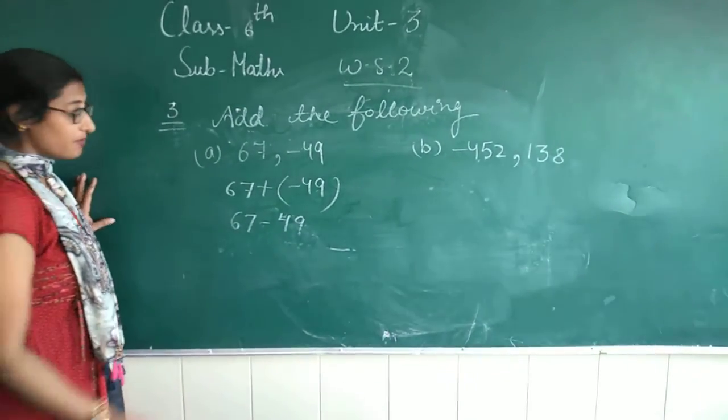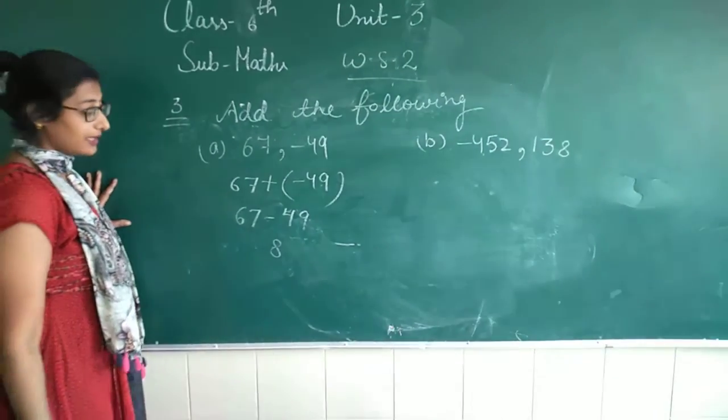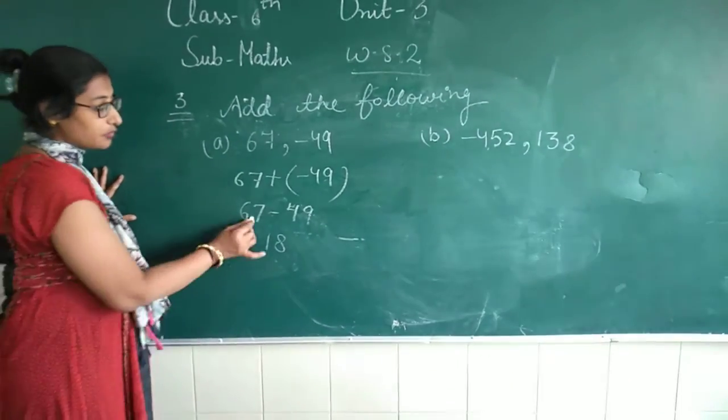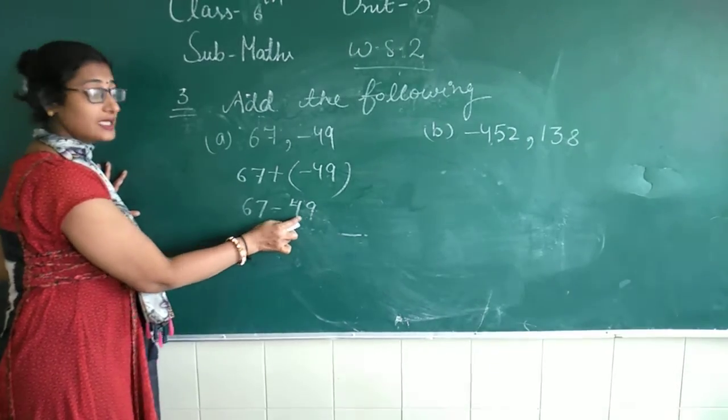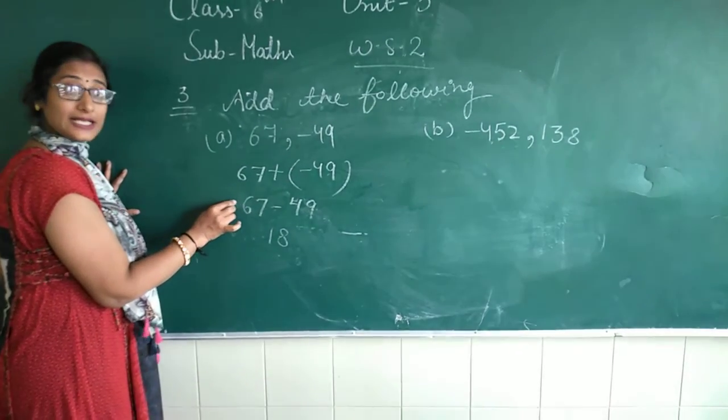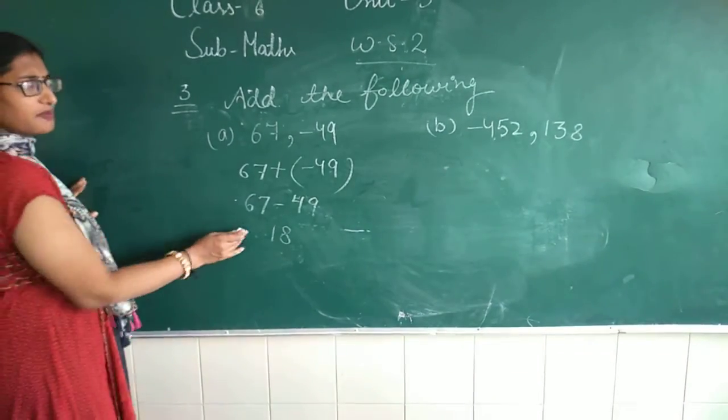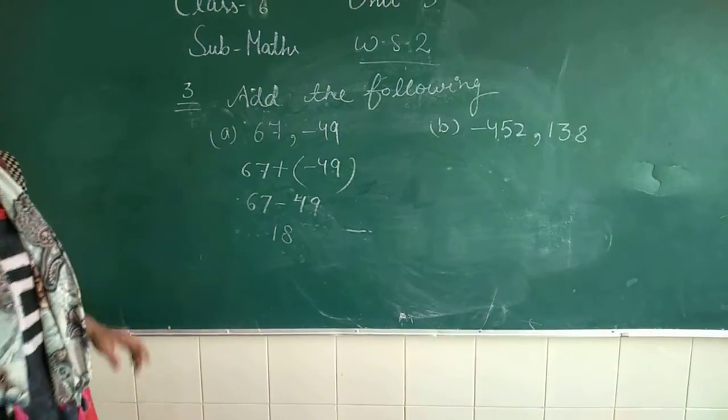67 mein se 49 ko minus kiye. 17 mein se 9 ko minus kiye, 8. 5 minus 4, 1. Ab dono mein se bada kaun hai? 67 bada hai. Uske aage kis ka sign hai? Plus ka. So, 18 ke aage bhi kis ka sign aayega? Plus ka. Koi bhi sign nahi likhte hain, kyunki uska meaning kya hota hai? Plus hi ho.